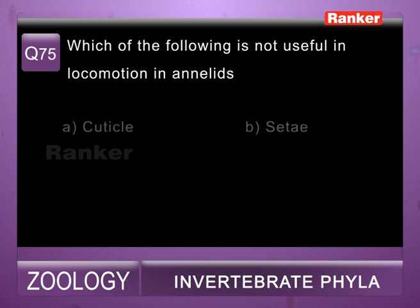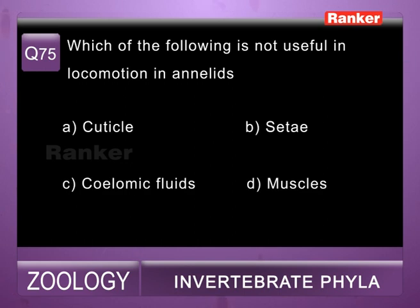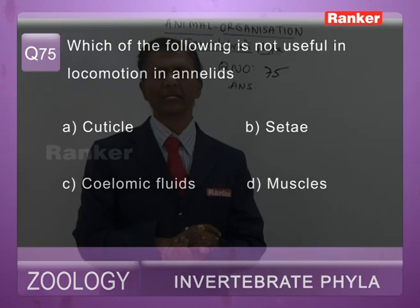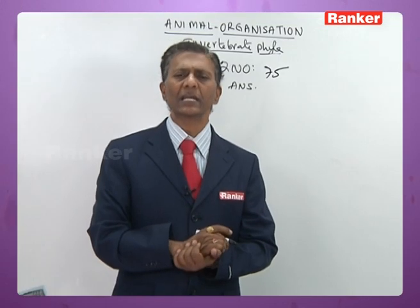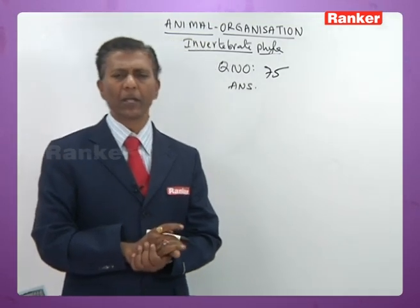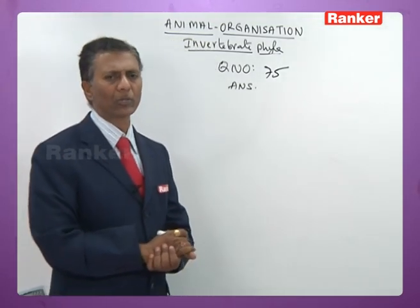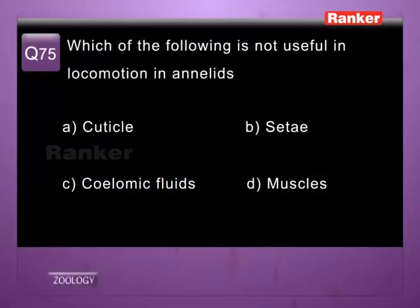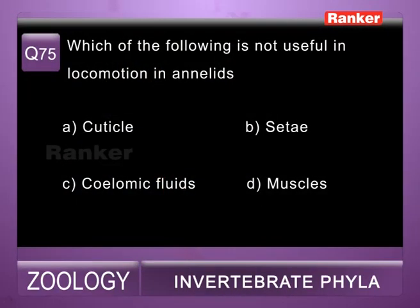Question seventy-five: which of the following is not useful in locomotion in annelids — a) cuticle, b) setae, c) coelomic fluid, d) muscles. Cuticle does not help in locomotion; the remaining (setae, coelomic fluid, muscles) all help. So seventy-fifth question correct answer is a) cuticle.